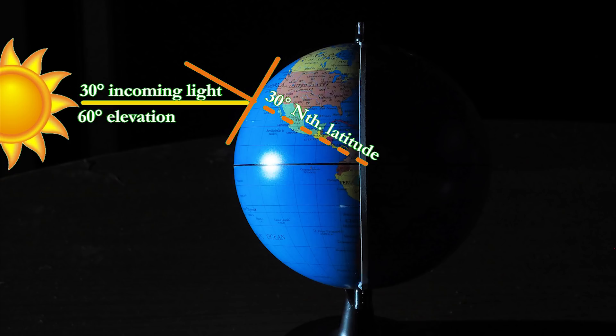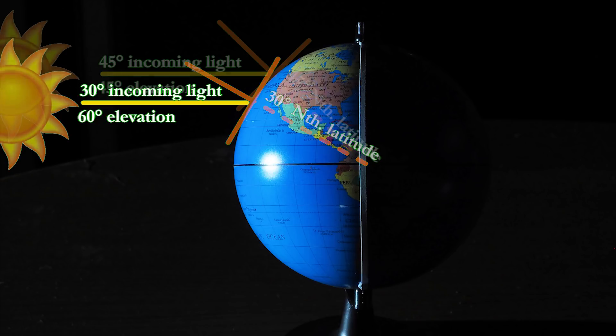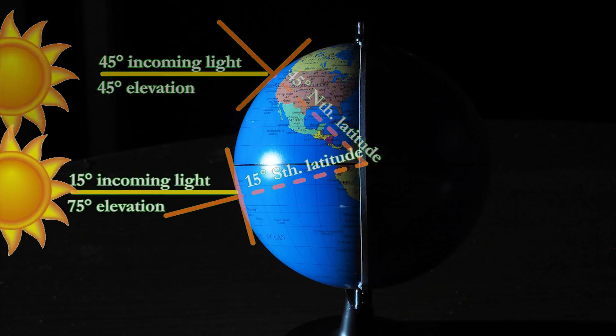To an observer, the angle of elevation is 60 degrees, making the zenith angle of the sun 90 degrees minus the latitude. And this works at all latitudes at the equinox.